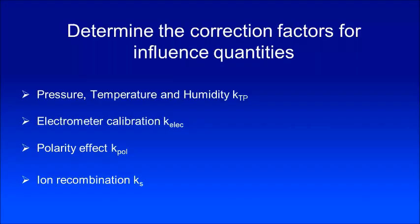The next thing is to determine the correction factors for influence quantities. Number one is the pressure, temperature, and humidity correction factor, called K_TP. Number two is the electrometer calibration factor K_elec, which is required only if your electrometer is calibrated separately from your ion chamber — most often they are calibrated together, so this factor will be one. The third is the polarity correction factor K_pol, and the fourth is the ion recombination correction factor K_s, which must also be determined for your ion chamber.